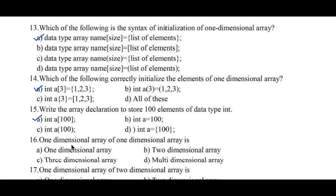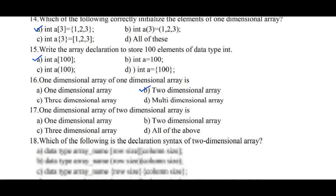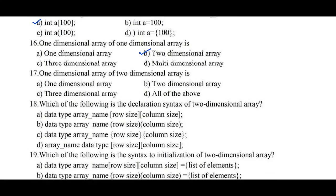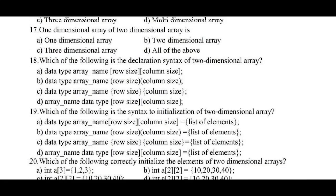Question number sixteen: one-dimensional array of one-dimensional array is — a) one-dimensional array, b) two-dimensional array, c) three-dimensional array, d) multi-dimensional array. One-dimensional array of a one-dimensional array is a two-dimensional array, hence option b is the right answer. Question number seventeen: one-dimensional array of two-dimensional array is — a) one-dimensional, b) two-dimensional, c) three-dimensional, d) all of the above. One-dimensional array of a two-dimensional array is a three-dimensional array, hence option c is the right answer.